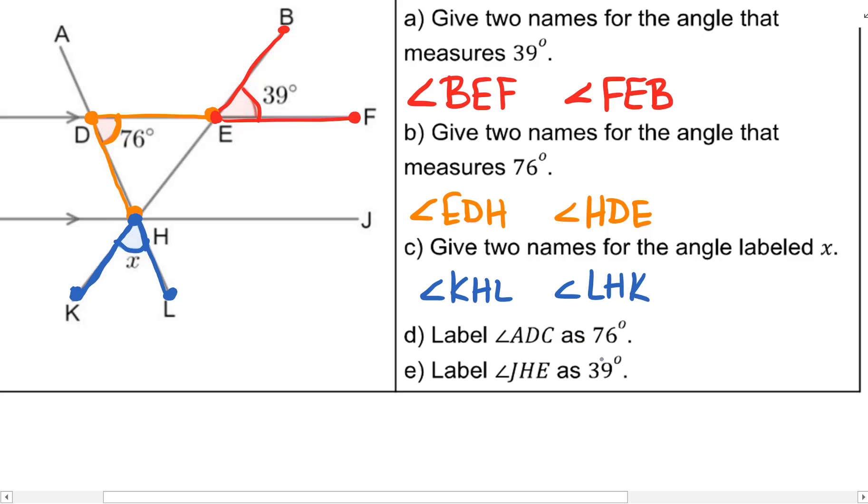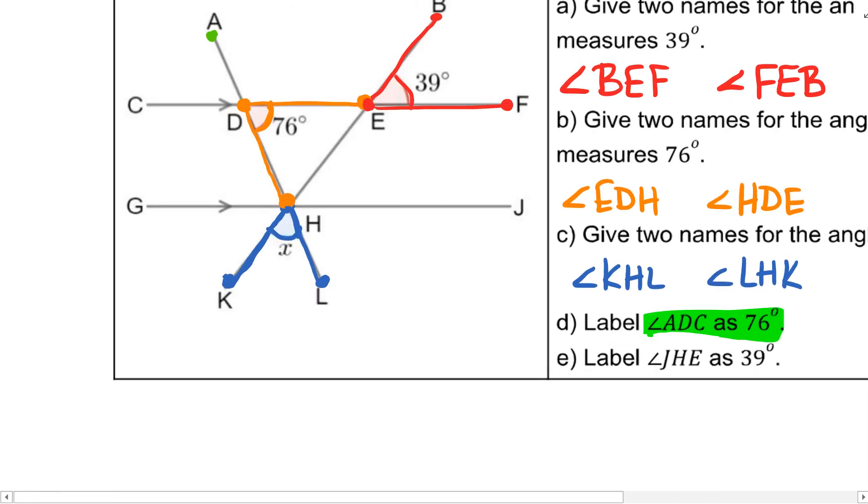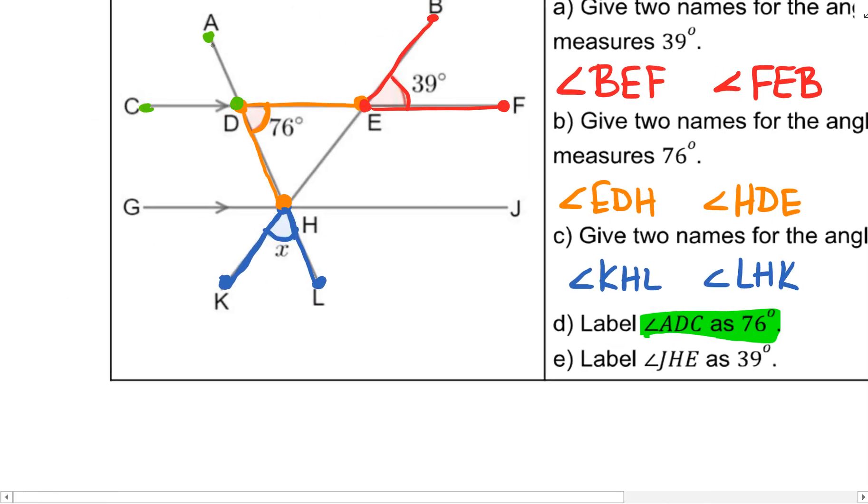Label angle ADC as 76 degrees. They just want to know that we know where angle ADC is. So I start with the point A, then I go to the point D, then I go to the point C. And it looks like this is the angle they are talking about. And they want me to label it as 76 degrees. Label angle JHE as 39 degrees. So J is here, H, and E is here. So you're looking at the angle between these. 39 degrees is what we're supposed to label that.